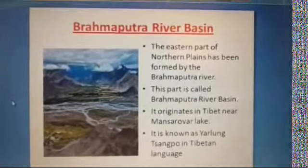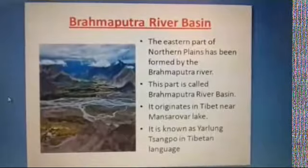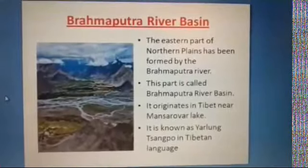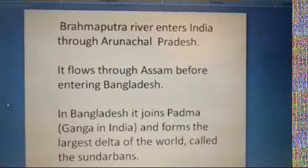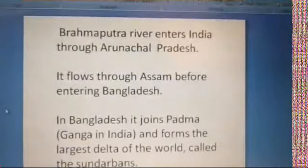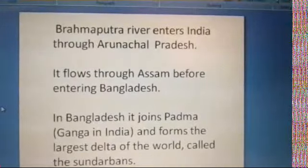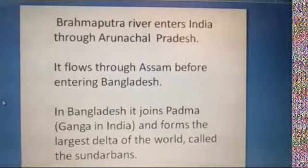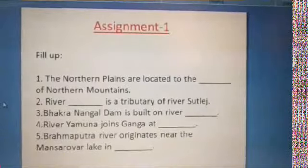The eastern part of the Northern Plains has been formed by the Brahmaputra River, and this part is called the Brahmaputra River Basin. It originates in Tibet near Mansarovar Lake and is also known as Yarlung Tsangpo in the Tibetan language. The Brahmaputra enters India through Arunachal Pradesh and flows through Assam before entering Bangladesh. In Bangladesh, it joins the Padma (Ganga) and together they form the largest delta in the world, called the Sundarbans.